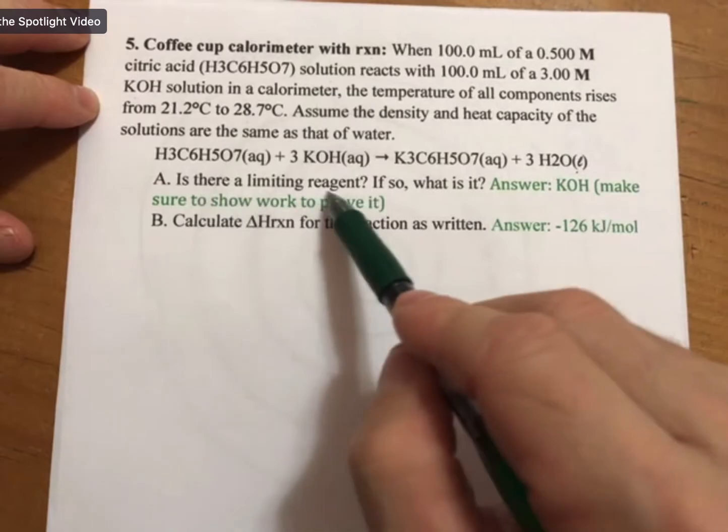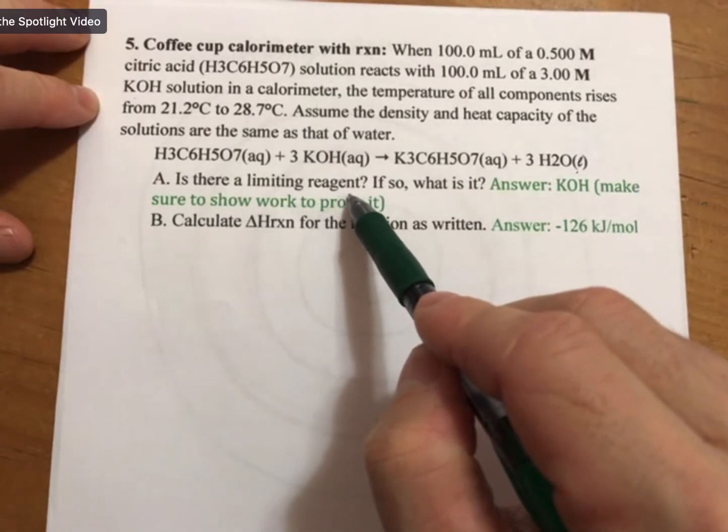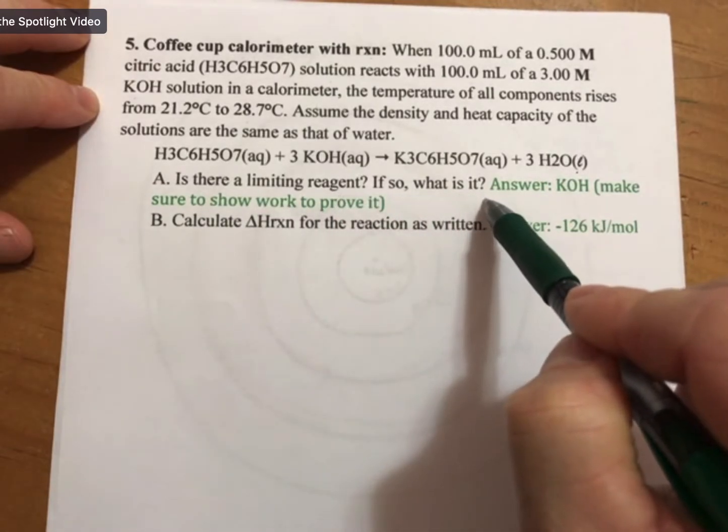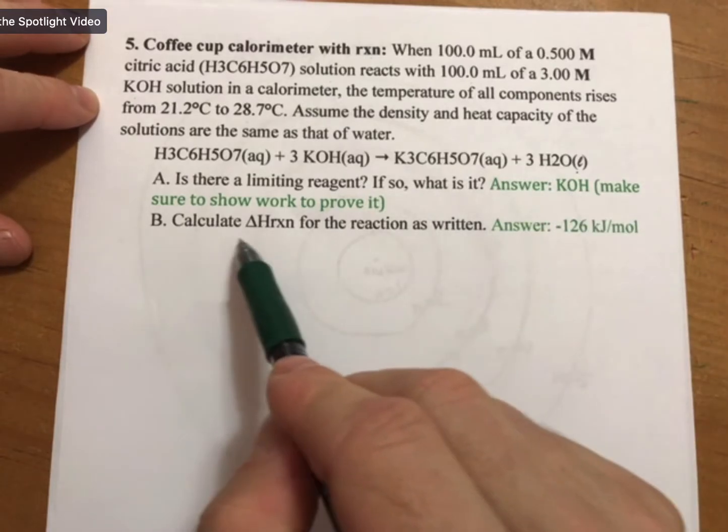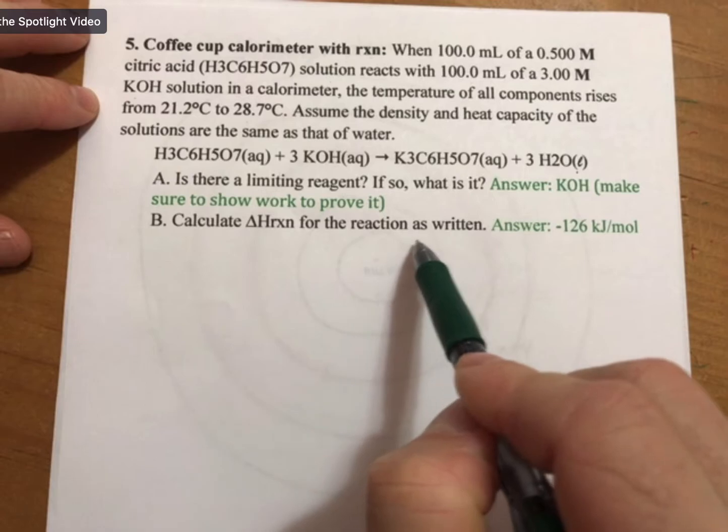Is there a limiting reagent or limiting reactant? If so, what is it? I've got the answer here, but we'll prove it. And calculate delta H reaction for this reaction as written.